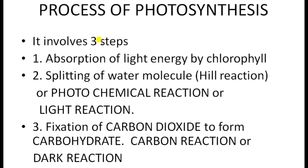The process of photosynthesis involves three steps. The first is absorption of light energy — that is, photons — by the chlorophyll. The second is splitting of water molecules to form oxygen, protons, and electrons. This is known as the photochemical reaction or light reaction, because it occurs in the presence of photons. The third step is fixation of carbon dioxide to form carbohydrate or glucose.